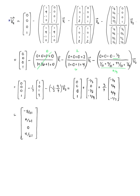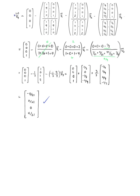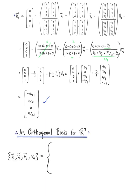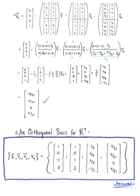Now that we have v4, we state our final answer. By the Gram-Schmidt process, we have obtained an orthogonal basis for R4 containing the vectors (1,4,-1,0), (1,0,1,2), (-1/9, 2/9, 7/9, -1/3), and (-8/21, 2/21, 0, 4/21). Making this our beautiful final answer.